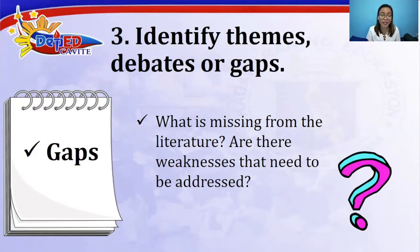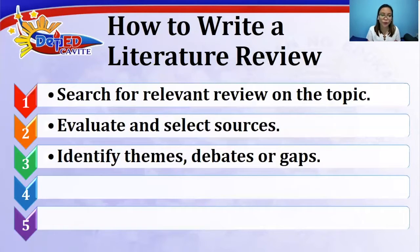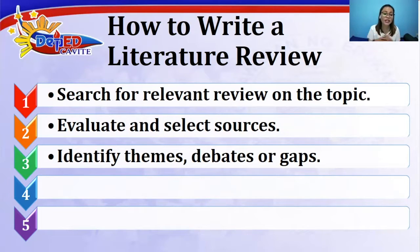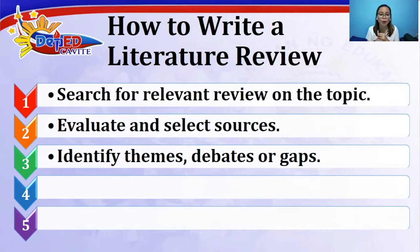Those are the first three steps on how to write a literature review. First is to search for relevant literature on the topic using the list of sources provided. Second is to evaluate and select sources — they must be credible and accredited by researchers and scholars. Third is to identify themes, debates, or gaps, which is how we synthesize and analyze our literature review. The fourth and fifth steps will be discussed by the next speaker, Ma'am Cora L. Del Rosario. Thank you very much.